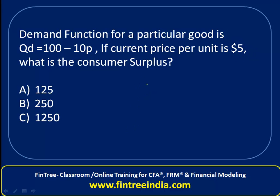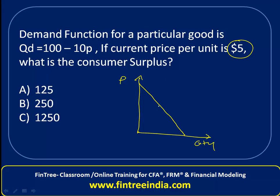Assuming this is your demand curve: on the y-axis we will always have price, and on the x-axis we will have quantity. If the current price is $5 per unit, substituting 5 into this equation, quantity demanded would be 50.